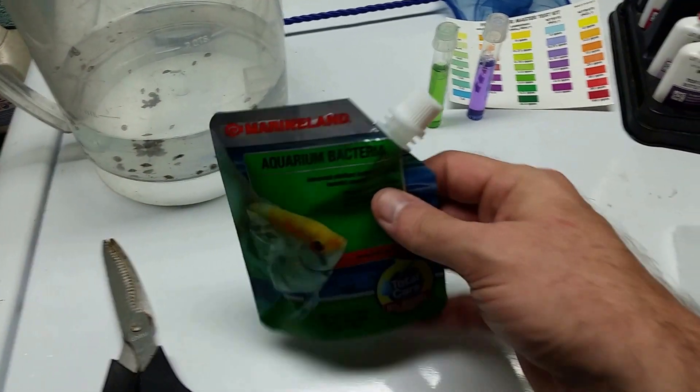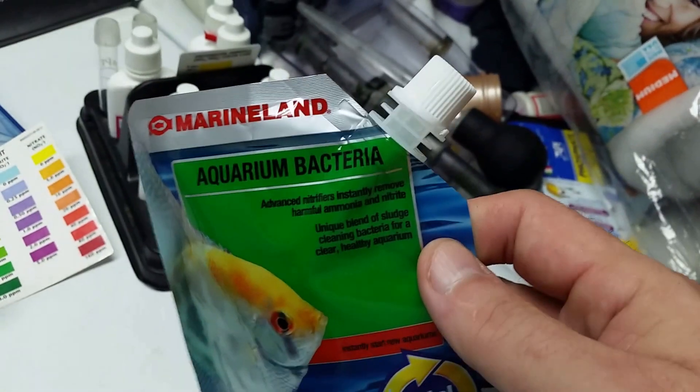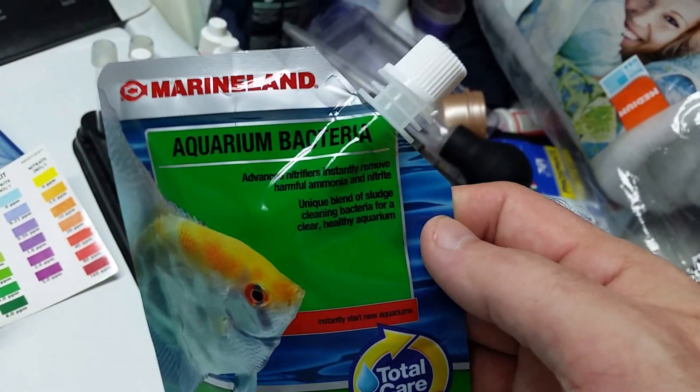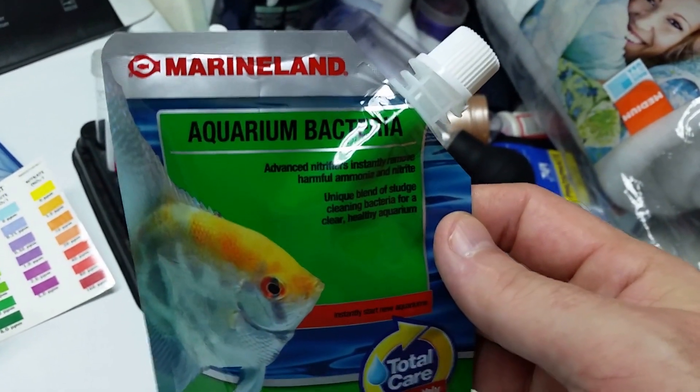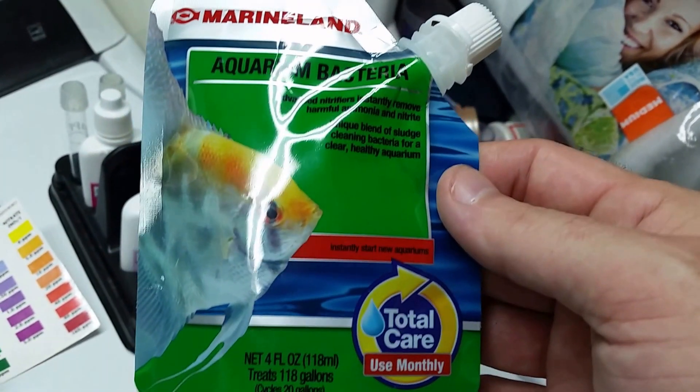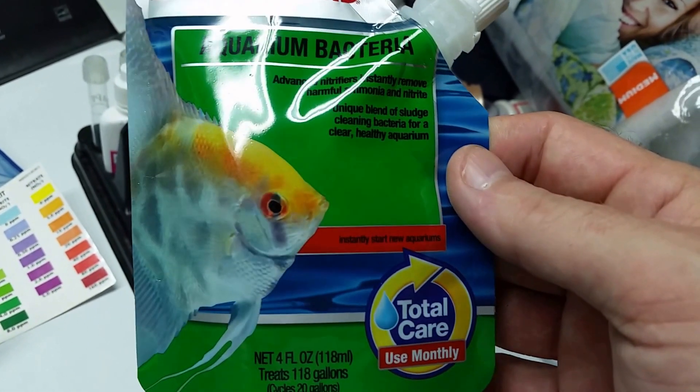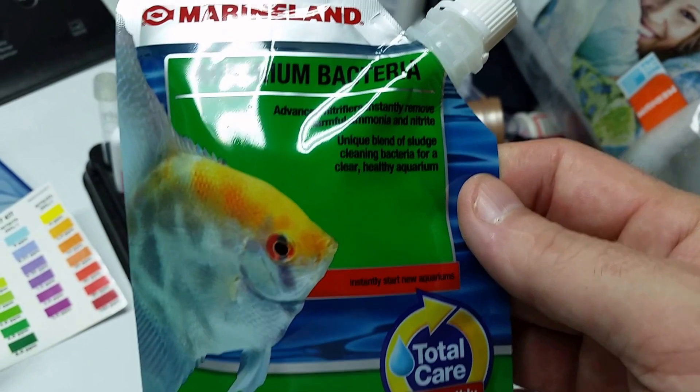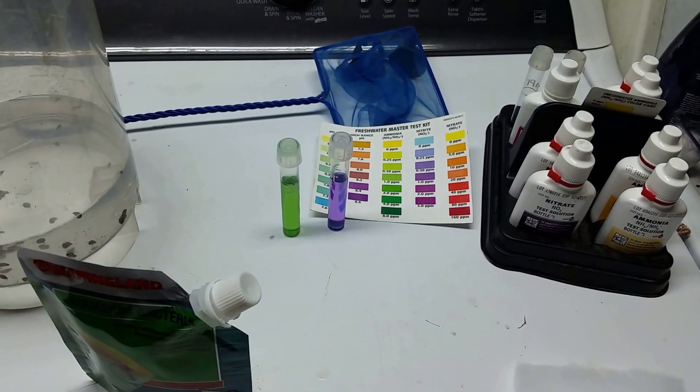So yesterday I went out and I bought some of this - this is the first time I've ever tried using this before. This is simply bacteria, it doesn't have any of the water conditioner or anything, and it only adds bacteria to your tank. This is supposed to treat 20 gallons. So what I did yesterday afternoon was poured about two-thirds of this pouch into the tank after a water change.